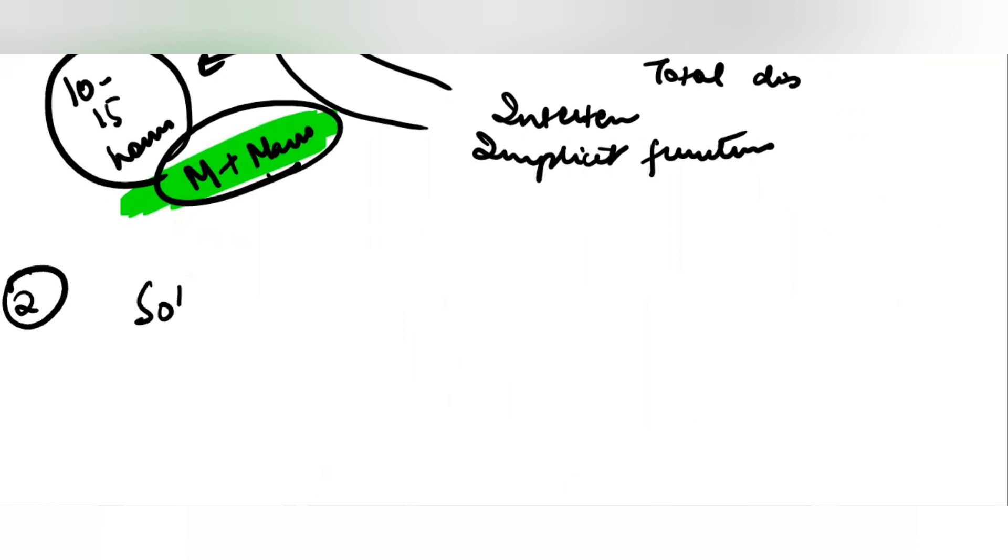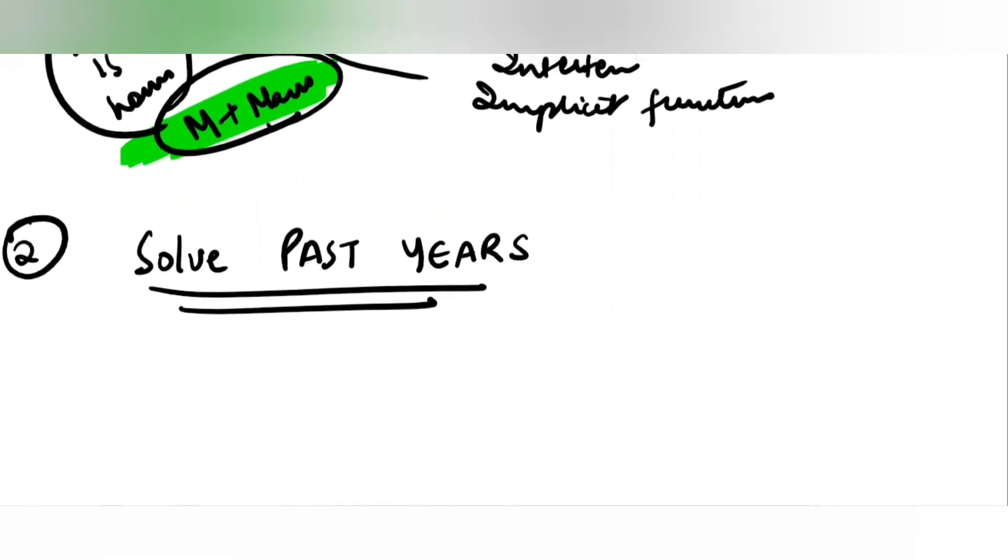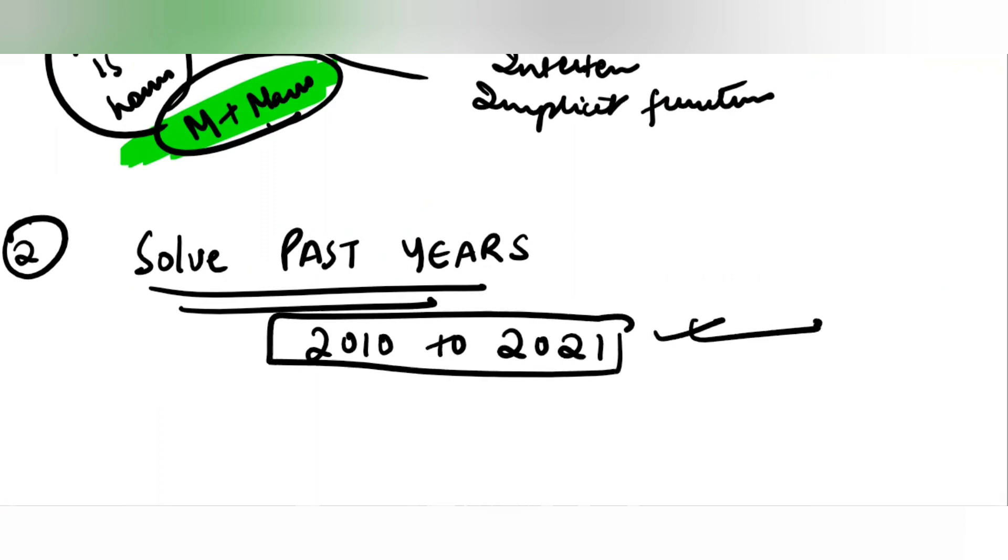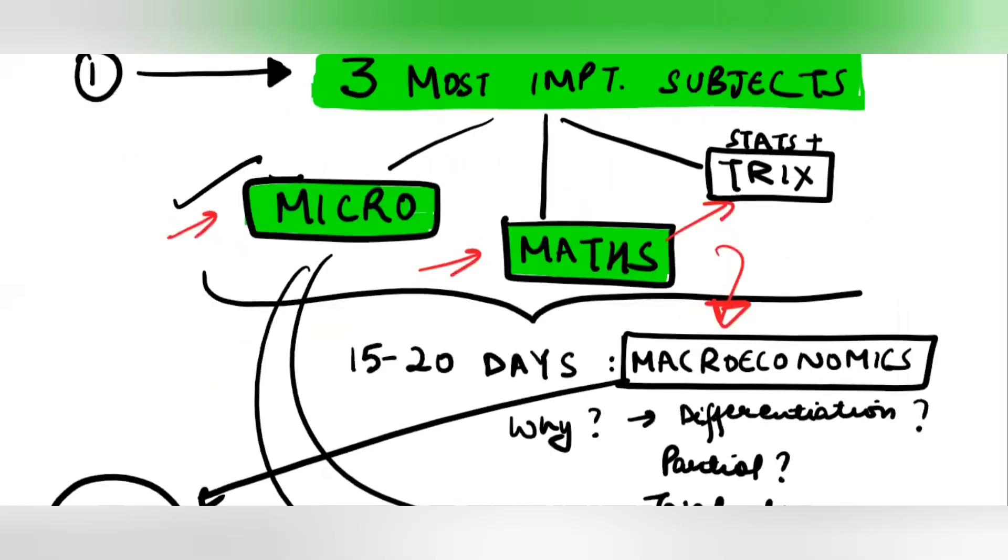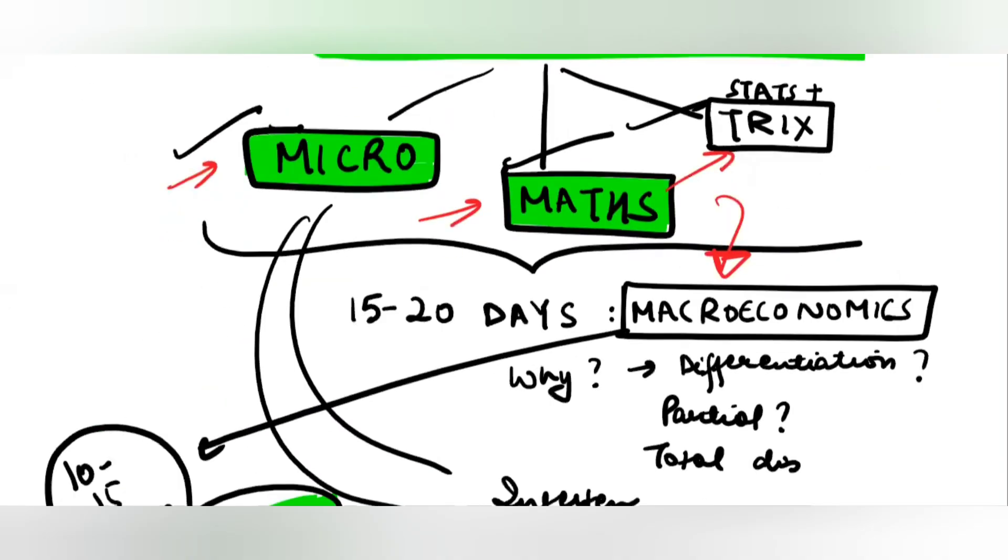Second, solve past years. You should not leave on any past year starting from at least 2010 to 2021. If you can go before 2010, very good. No question should be left untouched after you have prepared these subjects well and have given 10 to 15 days to macroeconomics.